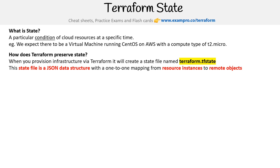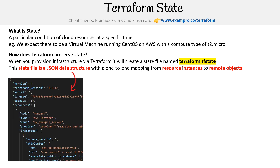If you're wondering what is a remote object versus a resource instance — I cannot tell you for certain. I would imagine one is a representation of things that are deployed in the cloud, and the other is objects or things represented in the state file, but they don't clarify it, so I just have to take a guess. This is kind of what the JSON structure looks like — you can see resources describing a type of instance and stuff like that.